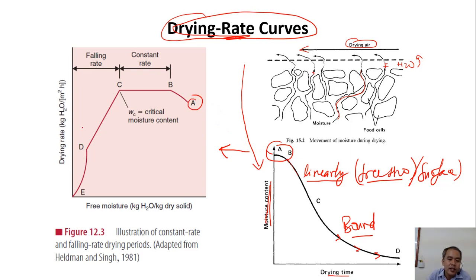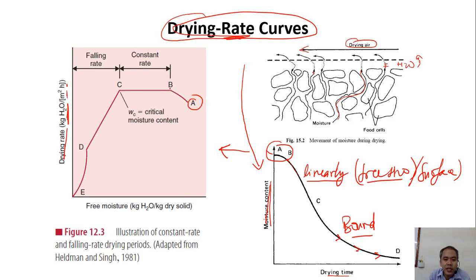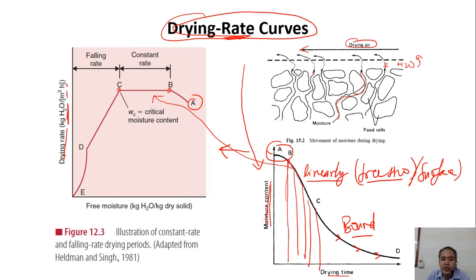The drying rate is how many kilograms of water we remove per surface area of the food per unit of drying time. From B to C the rate is constant — after the same period of time you remove the same amount of water. This is called the constant drying rate period.